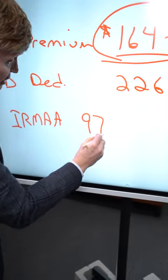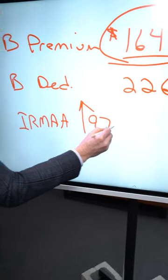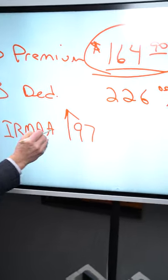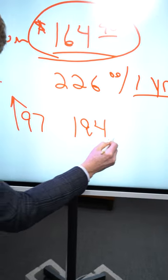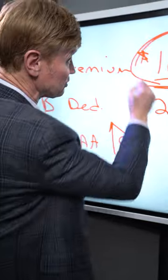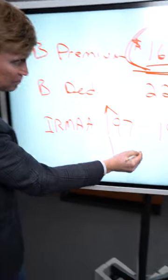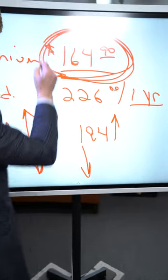If you're a single person and you make above $97,000, you'll pay more than $164.90. A couple, if you make above $194,000, you'll pay more than that. But as long as we stay below the threshold in these two areas, we'll pay the $164.90.